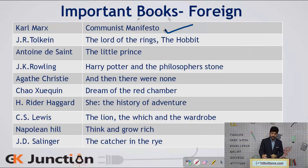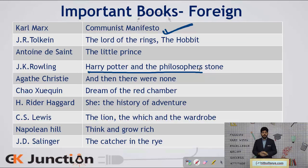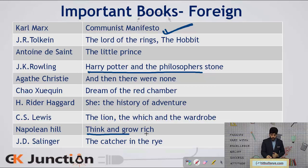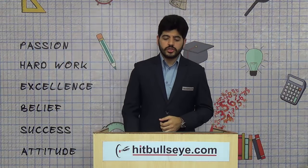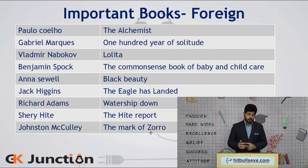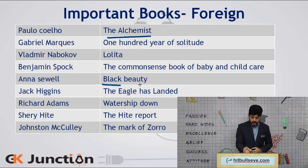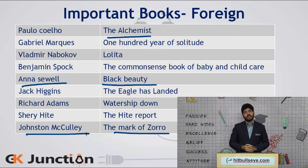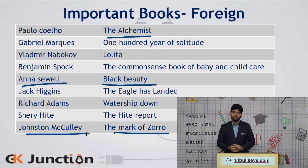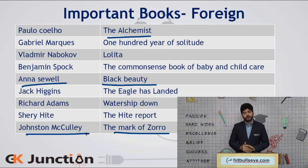We also have very important books such as 'The Communist Manifesto' written by Karl Marx; J.K. Rowling wrote the Harry Potter series; Napoleon Hill wrote 'Think and Grow Rich'. Further foreign books include 'The Alchemist'; 'Black Beauty' written by Anna Sewell; 'The Mark of Zorro' written by Johnston McCulley; and 'Watership Down' by Richard Adams. These are certain books in the foreign domain which we need to be aware of.